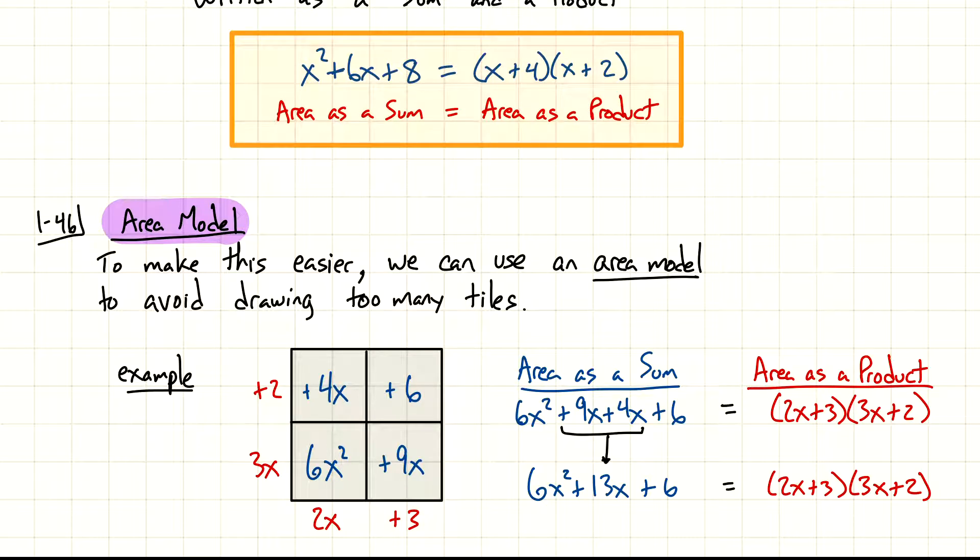That's where all these numbers are coming from. And over here I have just kind of a summary of what that means. The area as a sum would be everything inside. So, those are the four terms. All I did was copy them. And those could be simplified, combined like terms. 9x and 4x give us 13x. And then the outside dimensions, 2x plus 3 and 3x plus 2, we can multiply those and that would be the product.